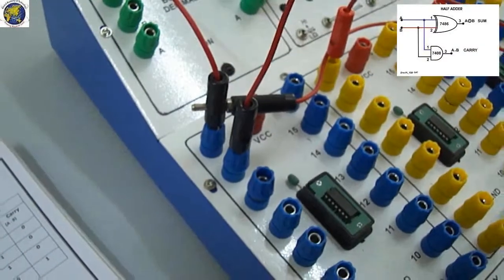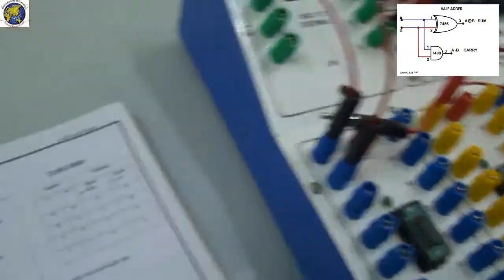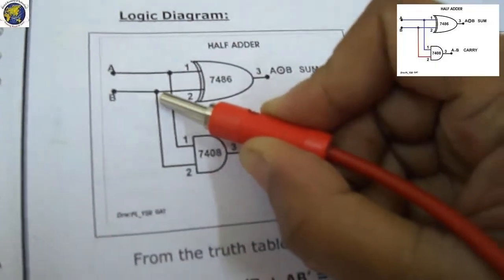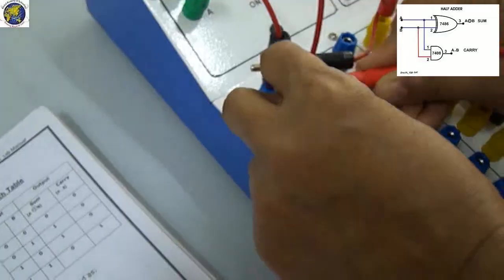Again the pin number 2 of 7486 is connected to AND gate pin number 2. So 7486 pin number 2 to AND gate pin number 2.